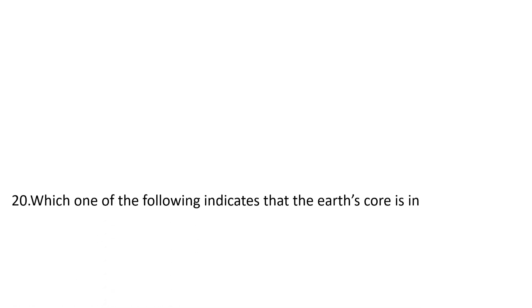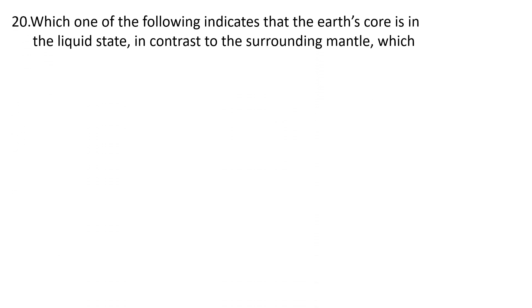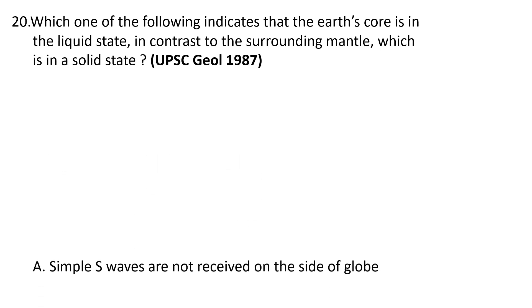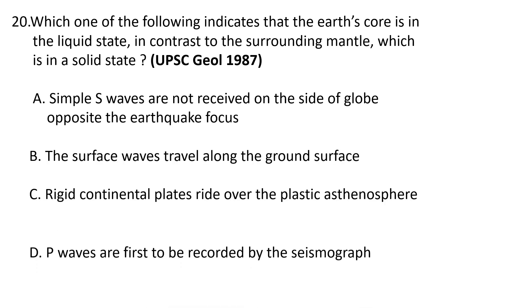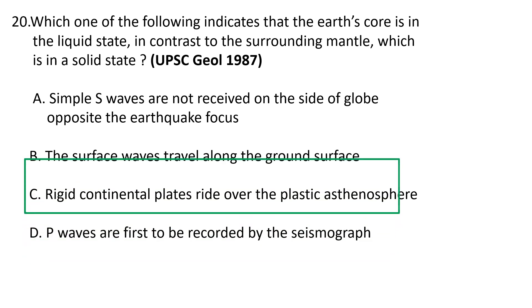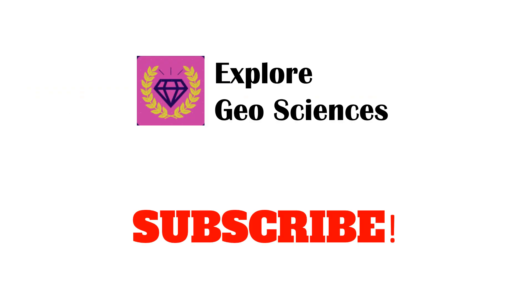Twentieth question: which one of the following indicates that the Earth's core is in a liquid state, in contrast to the surrounding mantle which is in a solid state? Choices: a) simple S waves are not received on the side of the globe opposite the earthquake focus, b) surface waves travel around the ground surface, c) rigid continental plates ride over the plastic asthenosphere, and d) P waves are the first to be recorded by the seismograph. The correct answer is a) S waves are not received on the side of the globe opposite the earthquake focus. Thank you.